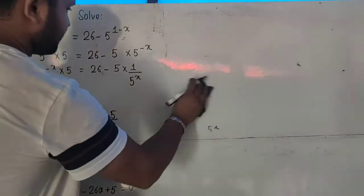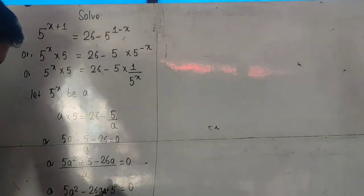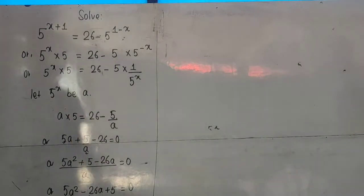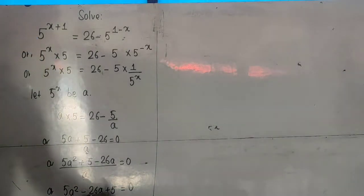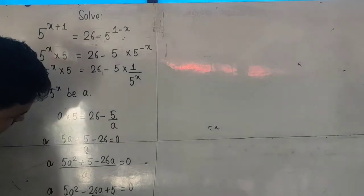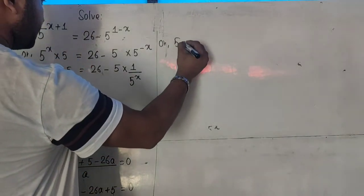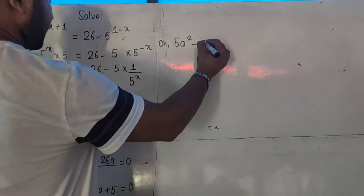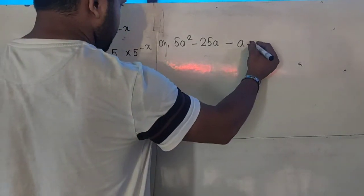Now I factorize 5a² - 26a + 5 = 0. I need two numbers that multiply to give 5 times 5 equals 25, and add to give 26. Those numbers are 25 and 1, since 25 plus 1 is 26. So I split the middle term: 5a² - 25a - a + 5 = 0.